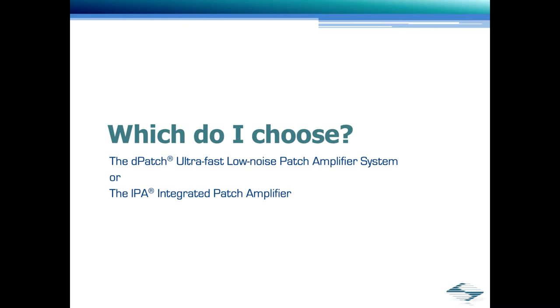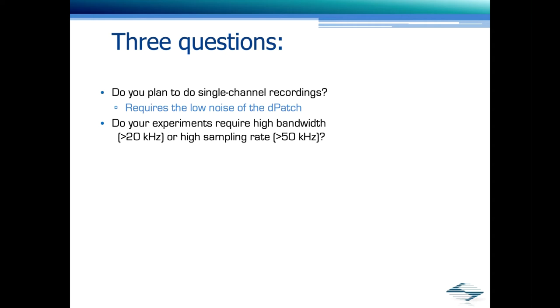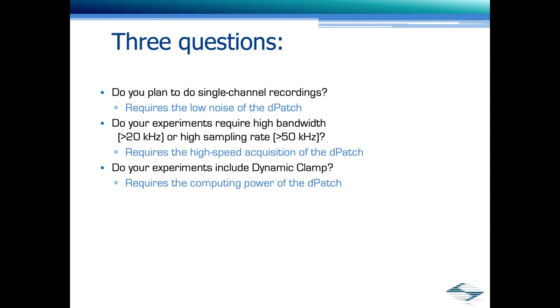Now we have choice of amplifiers. Which one do I choose? Well, typically here, we typically ask three questions. Do you plan to do single channel recordings? Then the low noise option of the DPatch is probably what you need. Do your experiments require bandwidth that is greater than 20 kilohertz and higher sampling rate greater than 50 kilohertz? Then that would also mean the DPatch would be a better choice. Finally, do your experiments include dynamic clamp? Well, the DPatch is the only commercial amplifier out there that has this option. My colleague, Jan, will talk about dynamic clamp option in detail in his talk.